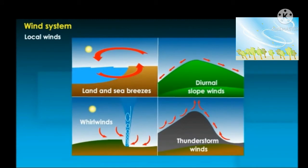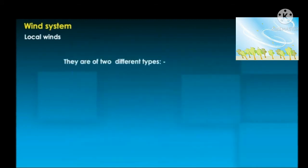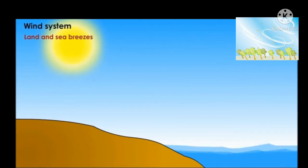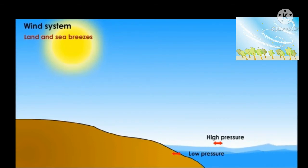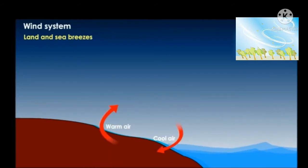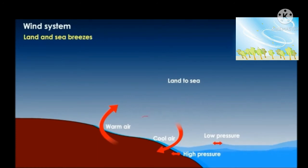Local winds blow over a limited area and have local significance. They are of two types: land and sea breezes, and mountain and valley winds. Land and sea breezes develop due to the difference in the rate of heating and cooling of landmass and sea. During daytime the land heats up quicker than the sea, causing low pressure over land and high pressure over the sea — the wind blows from sea to land, known as sea breeze. During the night the land releases heat quickly and becomes an area of high pressure while the sea has low pressure — the wind blows from land to sea, known as land breeze.